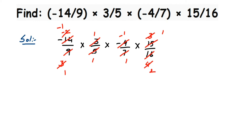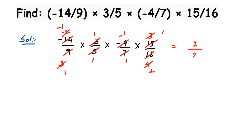Now multiply the remaining numbers. In the numerator: minus 1 × minus 1 × 1 × 1 = 1. In the denominator: 1 × 1 × 1 × 2 = 2. For the sign: we have two negative signs, and since two is an even number, the answer is positive. So the numerator is positive 1, and the final answer is 1 over 2.